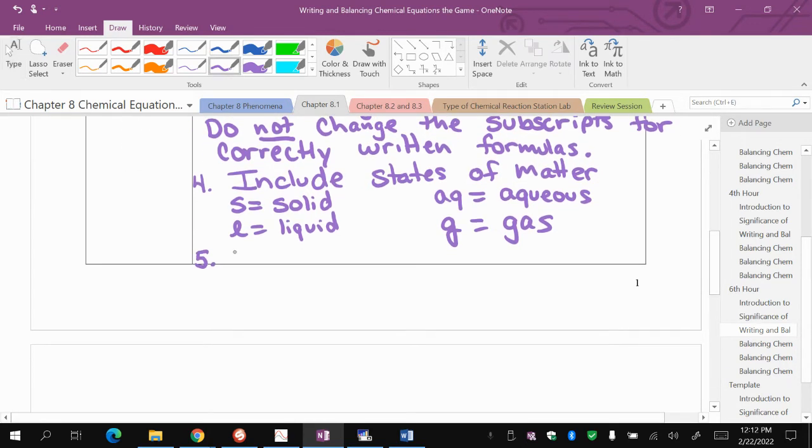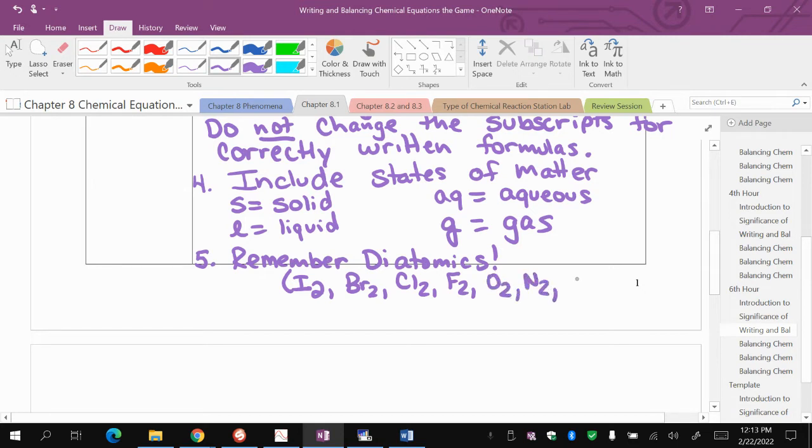Rule number five, remember your diatomics. These, when they're by themselves, are diatomic, which means there are two of them. These are also listed on the back of your periodic table. Iodine, bromine, chlorine, fluorine, oxygen, nitrogen, hydrogen are diatomic when they're by themselves, not when you're writing a formula.